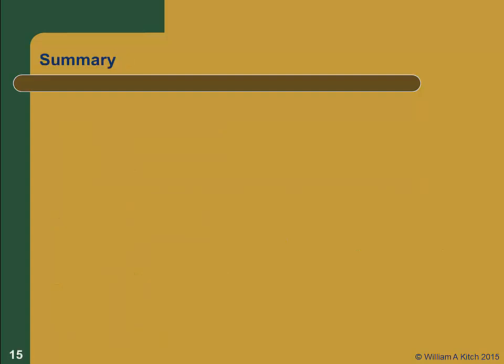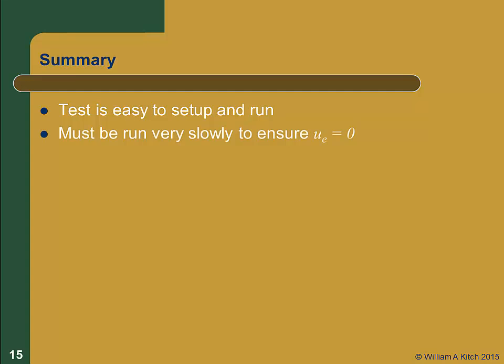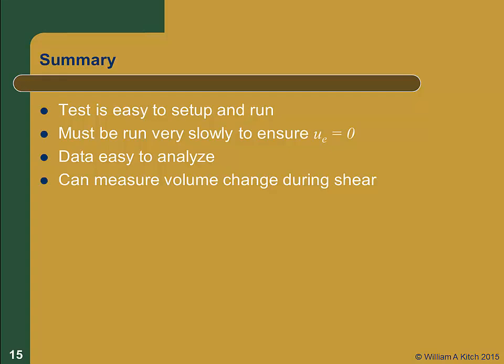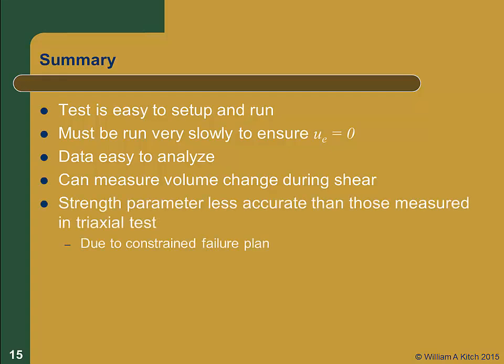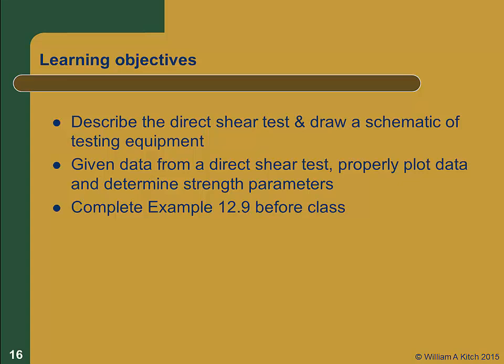In summary, the direct shear test has the following characteristics. The test is easy to set up and run. For clay soils, the test must be run very slowly, sometimes taking over a day to reach failure. The data is relatively easy to analyze. We can measure the volume change during shear to determine if the soil is dilating or contracting. The shear strength parameters measured in this test are less accurate than those measured in triaxial tests. This is mostly due to the fact that we constrain the soil to fail on a certain plane, rather than letting the soil fail on whatever plane it would like to. This now concludes this presentation. You should now review your learning objectives. It would also be a really good time to review example 12.9 in your text. First, try and complete this example before class.